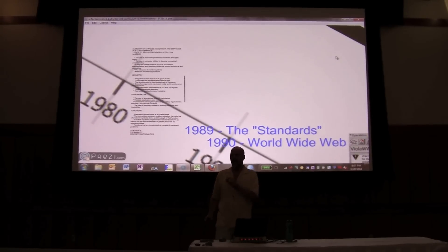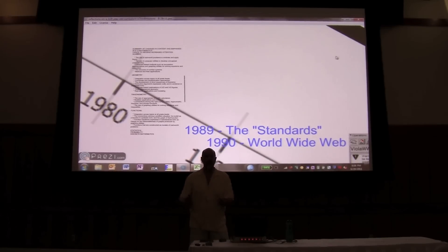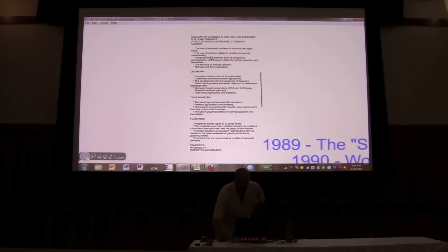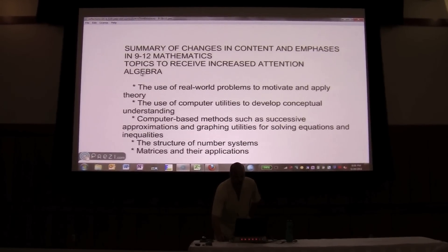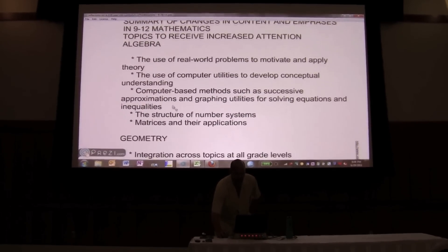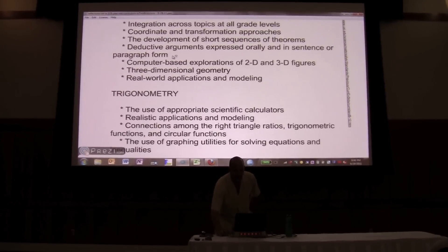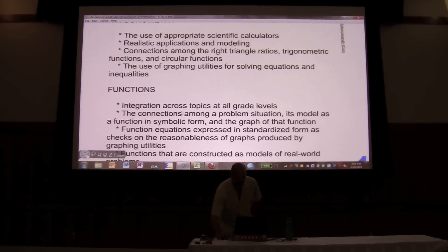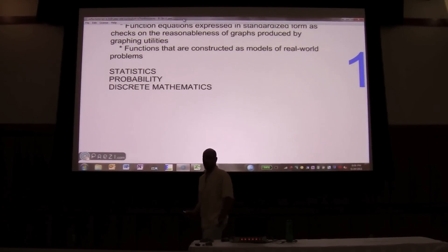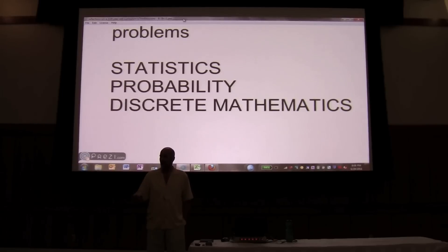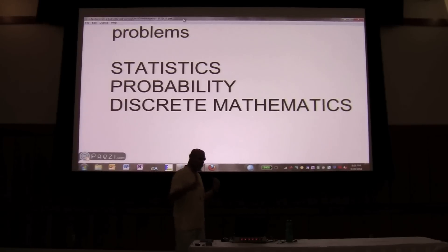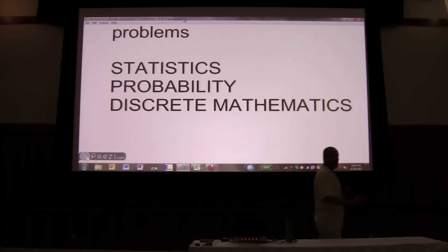Going back one year, the standards in 1989, the NCTM standards, I think was an attempt to try to say, hey, maybe it's time to make some changes. But if you look at the summary of changes in content and emphasis, you'll see that there are bullet points specifically saying what should happen for algebra, specifically what should happen for geometry, for trigonometry, for functions, and then here at the end, just three words. Statistics, probability, and discrete mathematics. And what I'd like to do for most of the rest of the talk is turn this on its head.